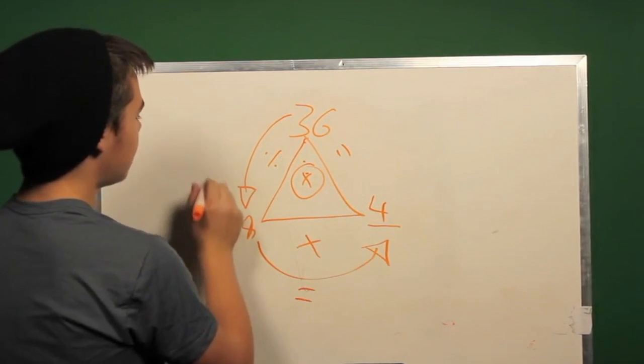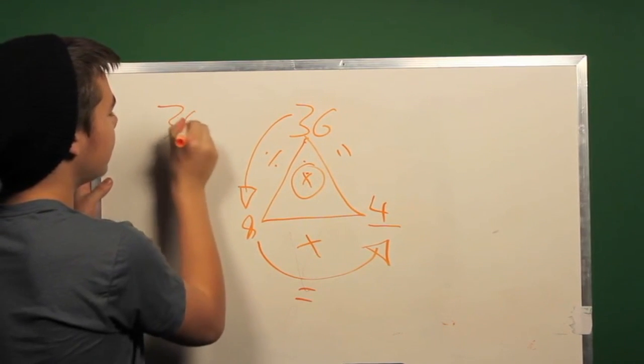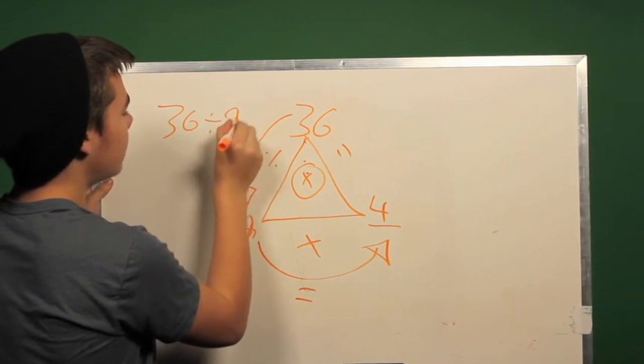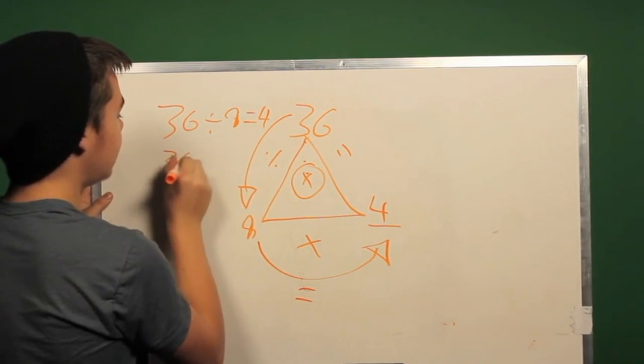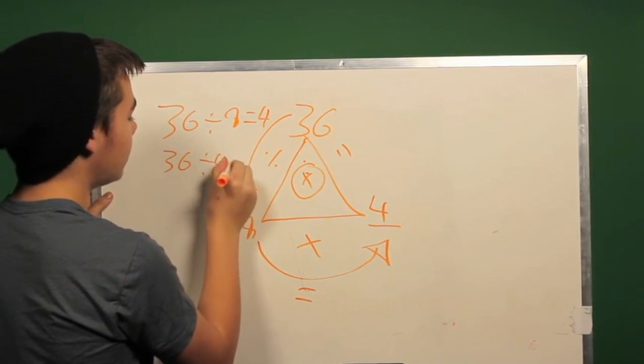So this means that 36 divided by 9 equals 4, and 36 divided by 4 equals 9.